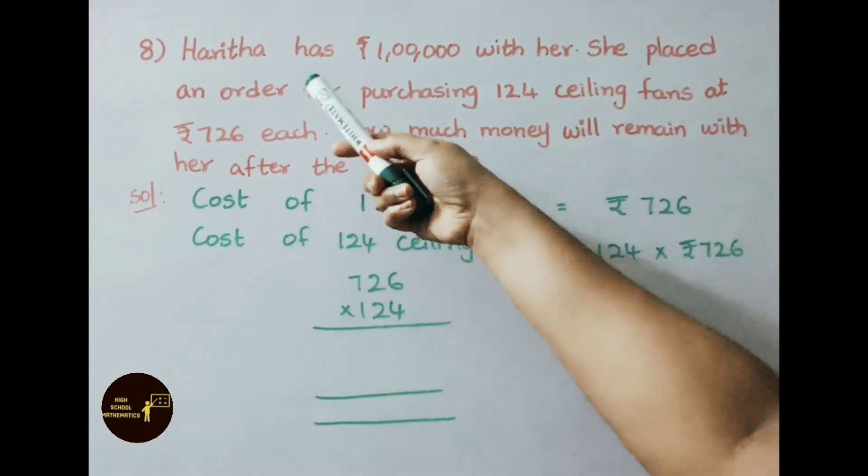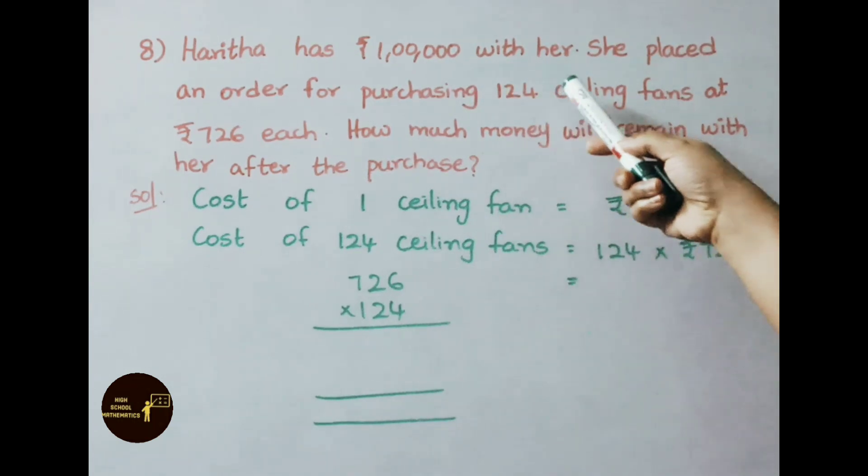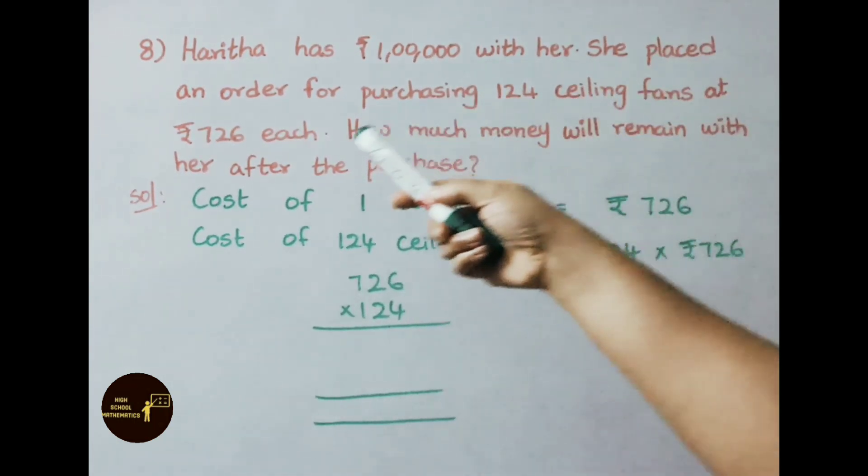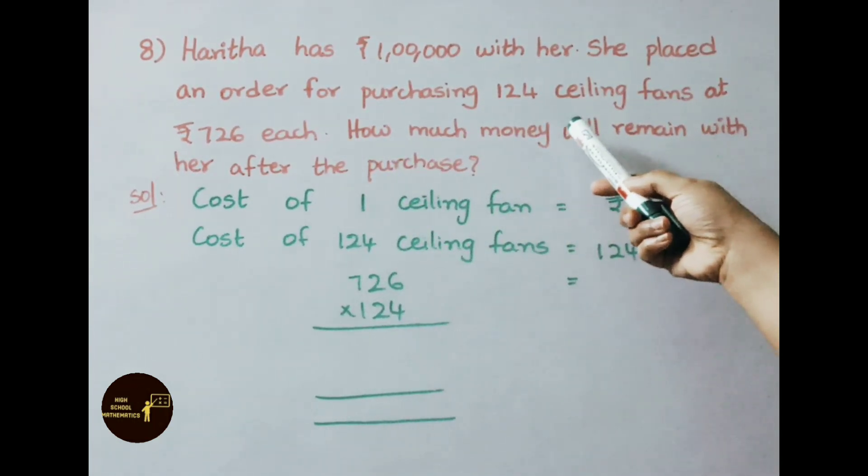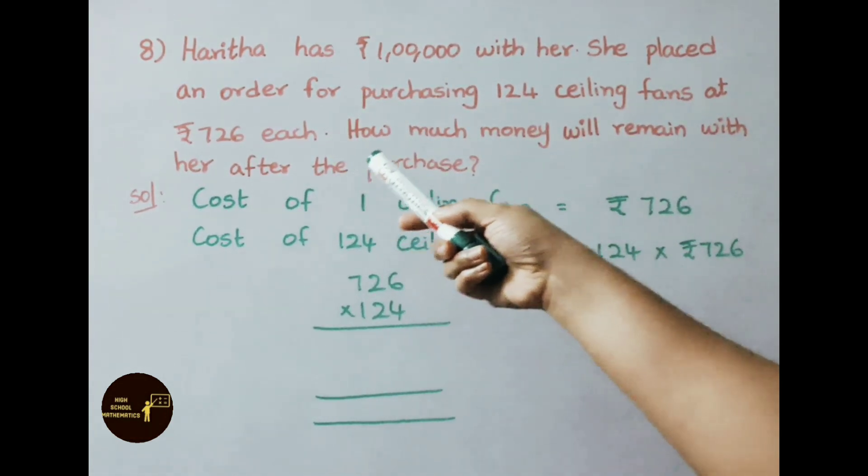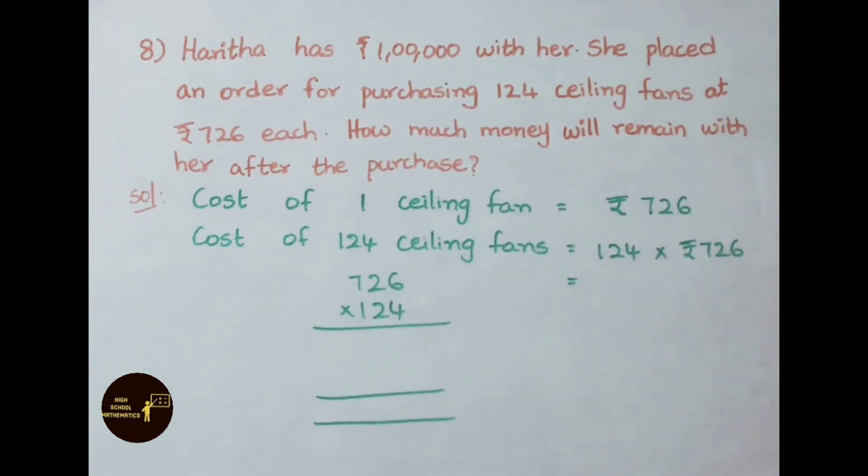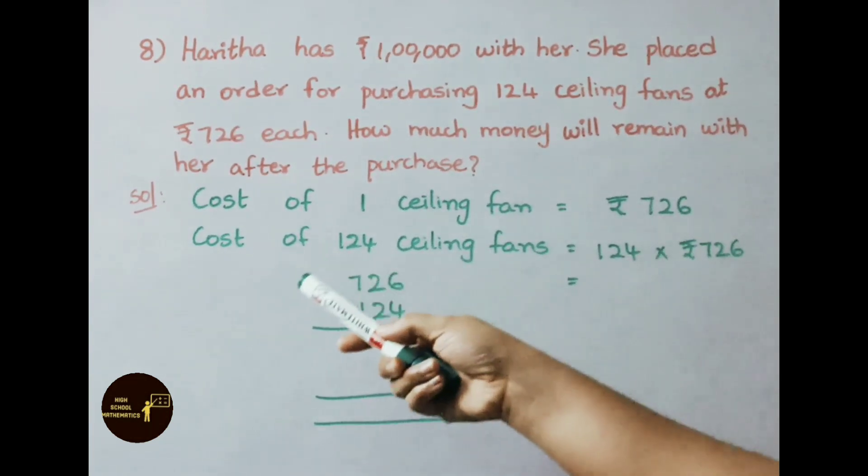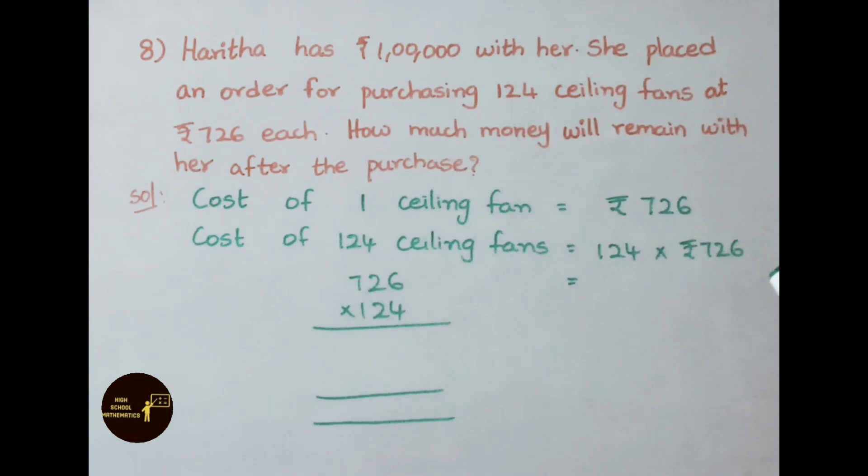See eighth sum now. Haritha has 1 lakh with her. She placed an order for purchasing 124 ceiling fans at 726 rupees each. How much money will remain with her after the purchase? Let us see the solution. Cost of 1 ceiling fan is 726 rupees. Cost of 124 ceiling fans, we need to find. That is 124 into 726, we need to multiply. Let us see the multiplication now.